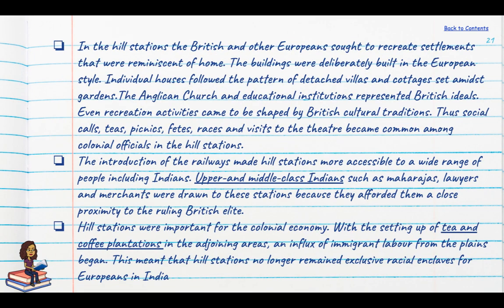In the hill stations, the British and other Europeans sought to recreate settlements reminiscent of home. Buildings were deliberately built in cottage style — detached villas and gardens, the Anglican church and educational institutions represented British ideals. Even recreational activities came to be shaped by British cultural traditions: social calls, teas, picnics, fetes, races and visits to the theatre.